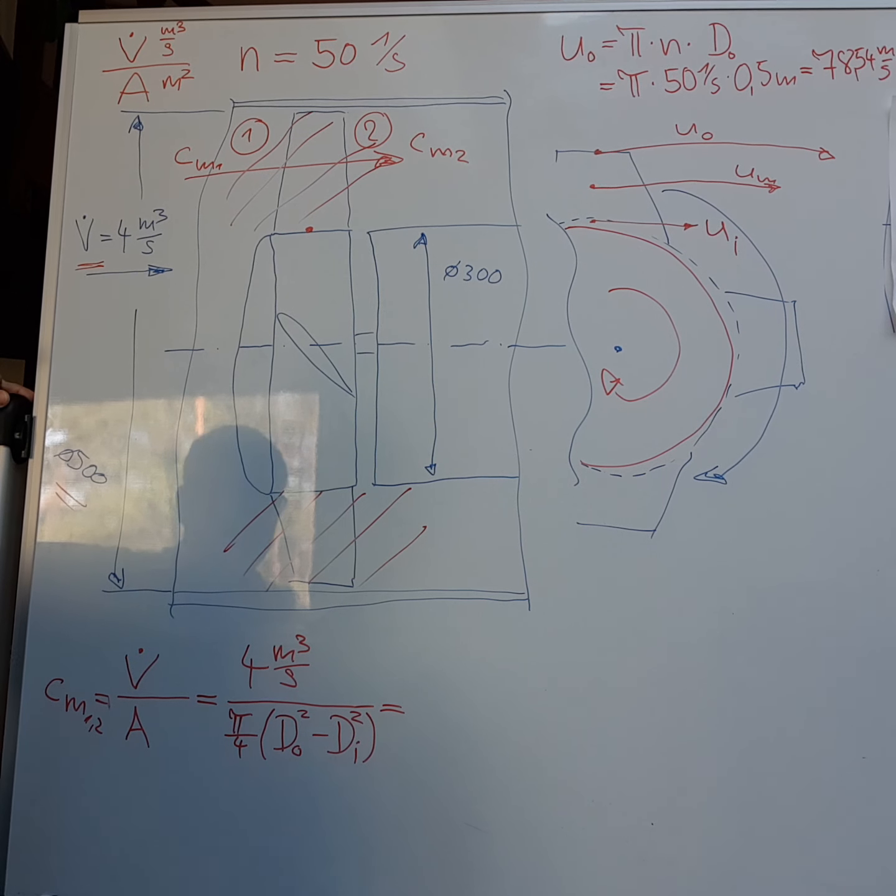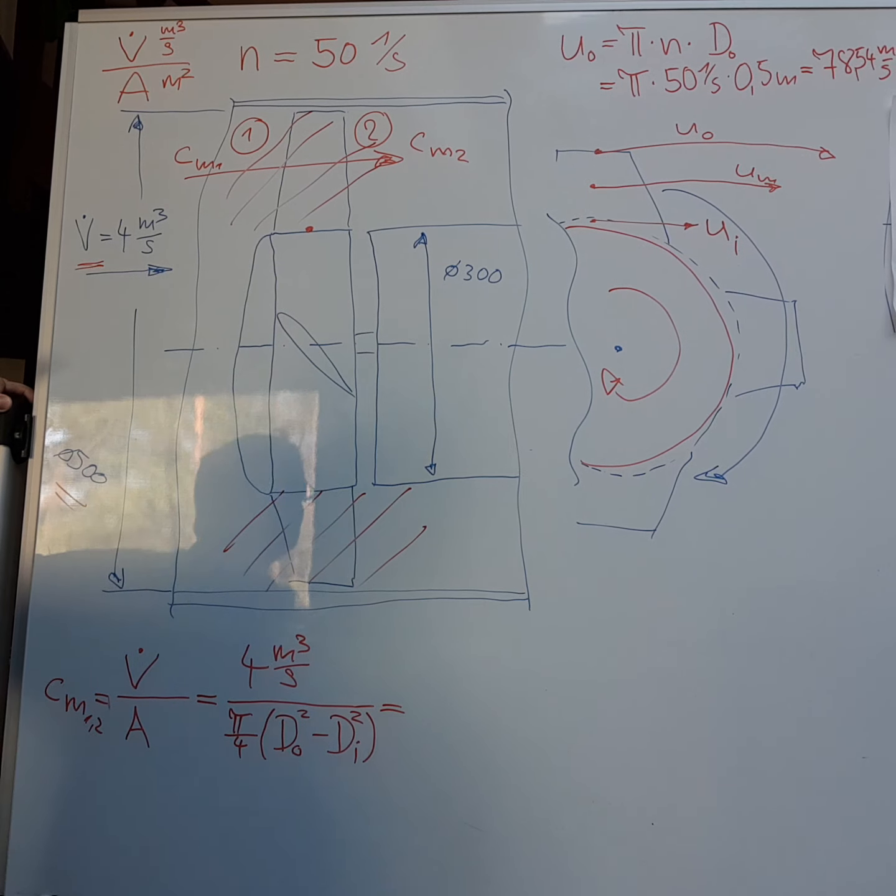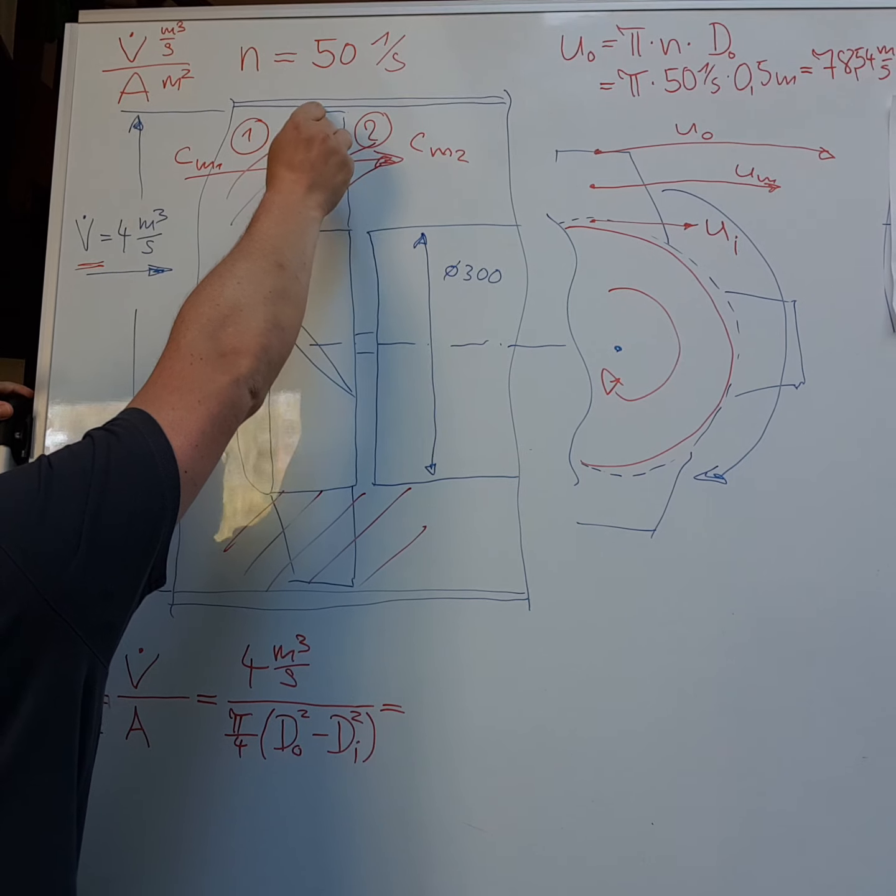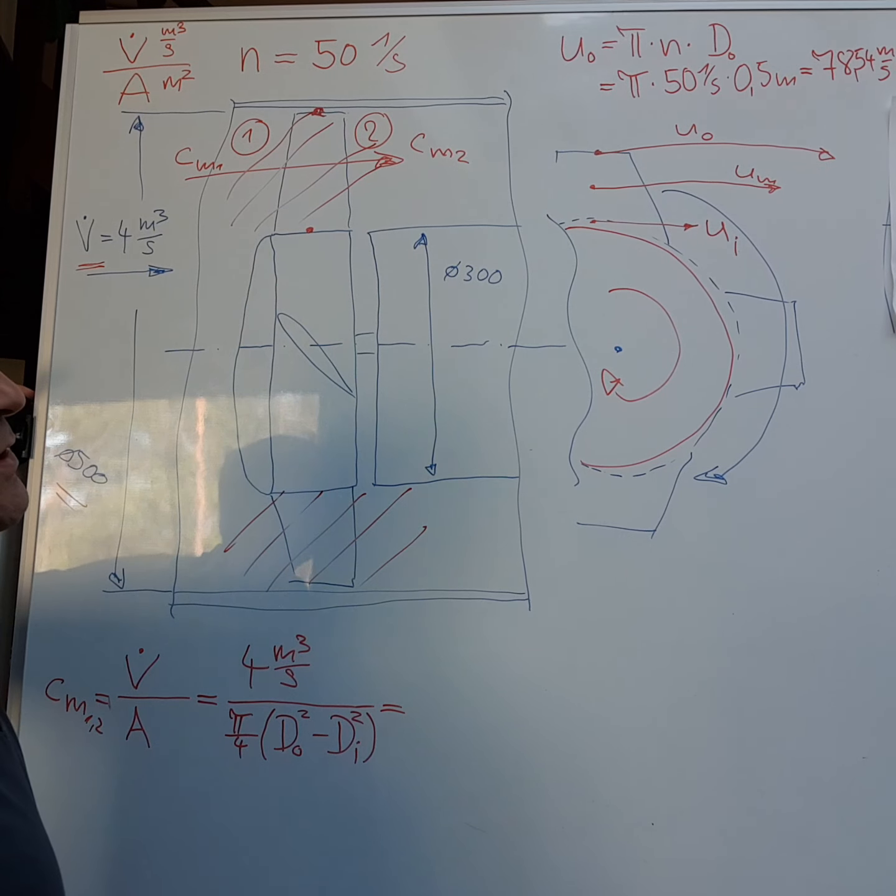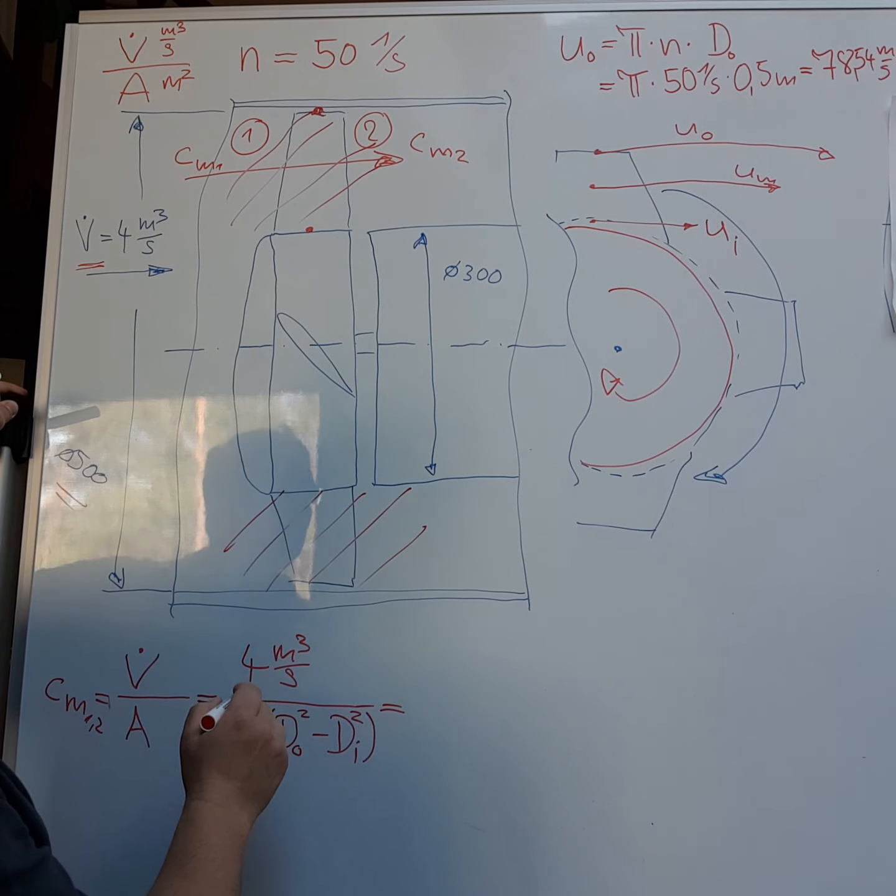We calculate it by D out squared minus D in squared. And then we get as a result for the outer point at the outer region, we get 4...